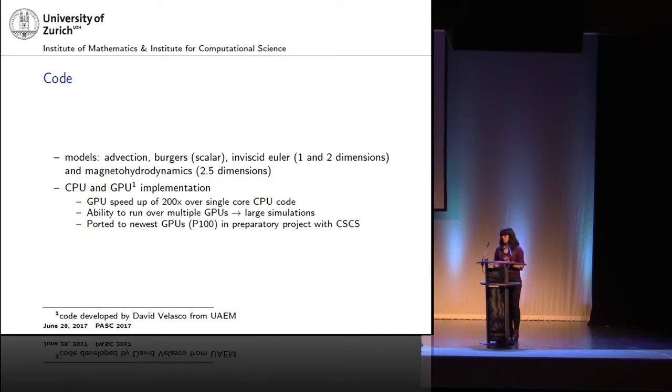Before I go onto the results, I'll just describe the code that we use for these simulations. We have several models implemented: it's actually Burgers, Euler, and Magneto-Hydrodynamics. We have a CPU and a GPU implementation, which has been done by one of our collaborators, David Velasco. With the GPU implementation, we have a good speedup, which means that now it's actually tractable to solve these DG schemes. We are also able to run over multiple GPUs.